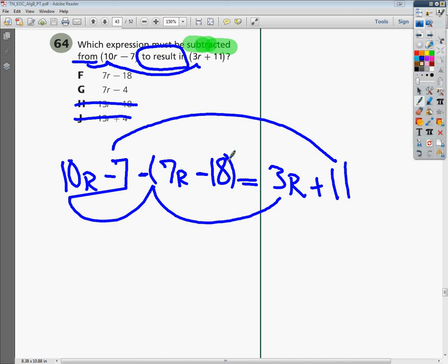If I take 10 and I subtract 7, it gets me to the 3 that I'm looking for. So based on all of this mess, my final answer is 7R minus 18. So the correct answer to number 64 is F.